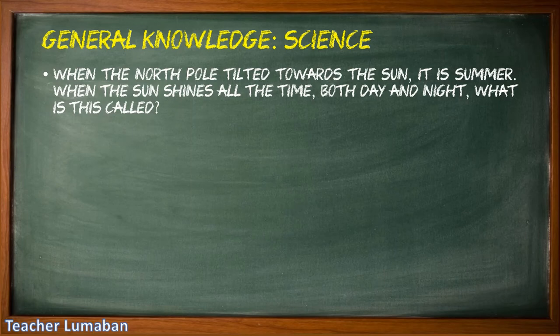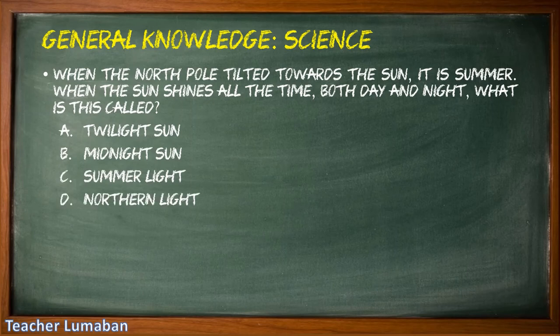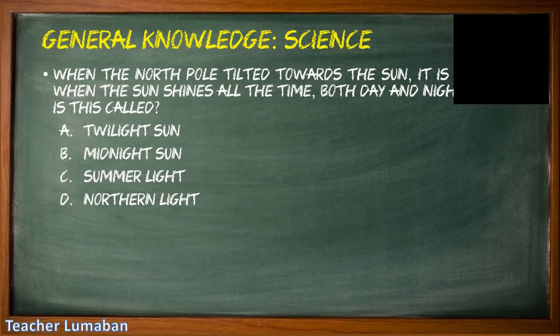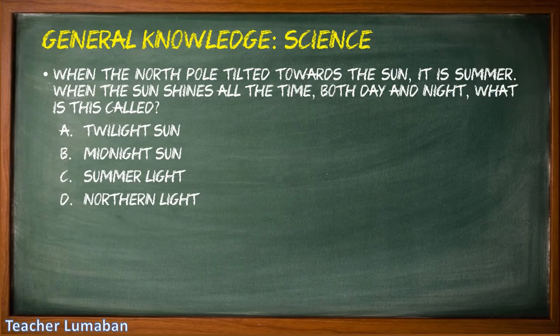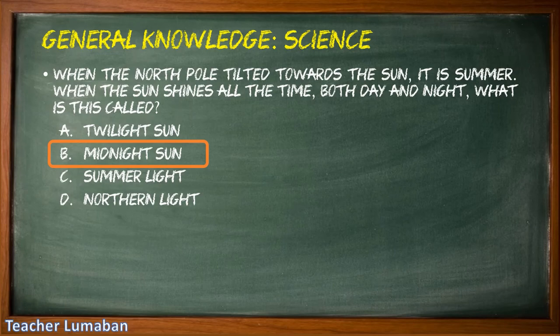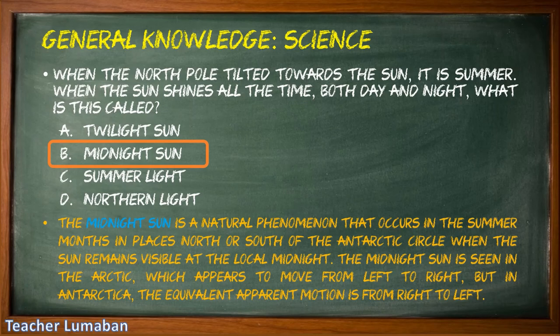When the north pole is tilted towards the sun, it is summer, and the sun shines all the time both day and night. What is this called? Letter A: twilight sun, Letter B: midnight sun, Letter C: summer light, Letter D: northern light. The correct answer is Letter B: midnight sun. The midnight sun is a natural phenomenon that occurs in the summer months in places north or south of the Antarctic Circle when the sun remains visible at local midnight. In the Arctic it appears to move from left to right, while in Antarctica the equivalent apparent motion is from right to left.